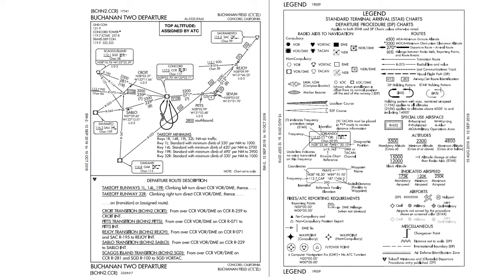Since your first five T's homework is going to be on a SID, let's start with one of those. Here is a SID from Concord, California called the Buchanan 2 departure. This is a SID as opposed to an obstacle clearance departure, which means that its primary purpose is to help with traffic flow and will still give us the obstacle clearance as long as we follow it.